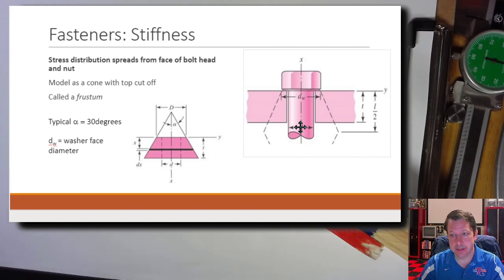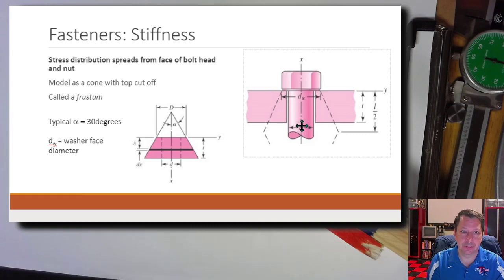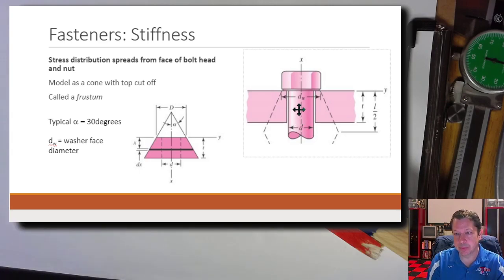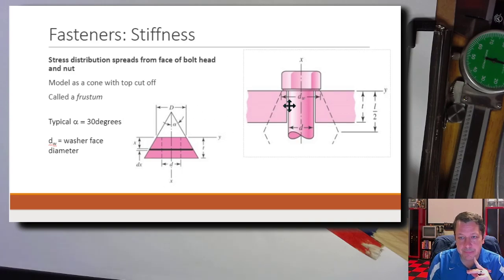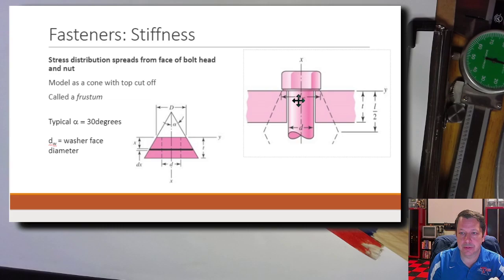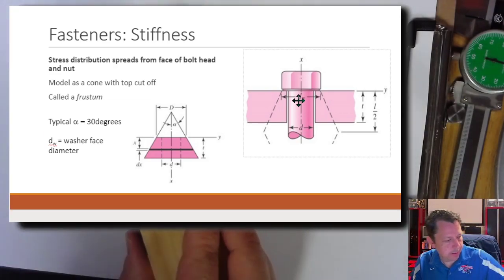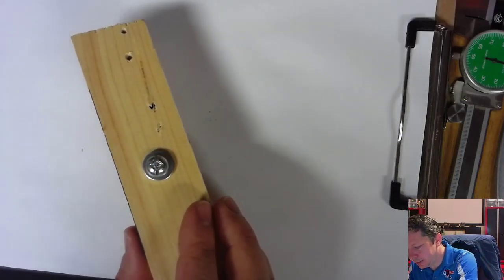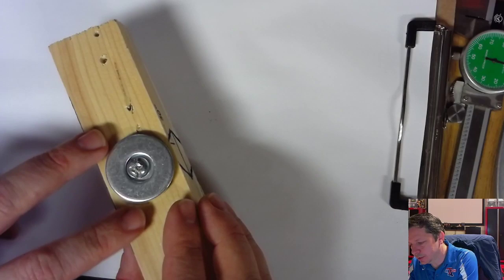Equations 8-21 and 8-22 are simplified versions usable only when all clamped material is the same material — typically all steel including the washers. If materials differ, you must use the general equation instead. Equation 8-22 with alpha = 30 degrees and D_w = 1.5d gives member stiffness k_m in one equation when all material is identical.